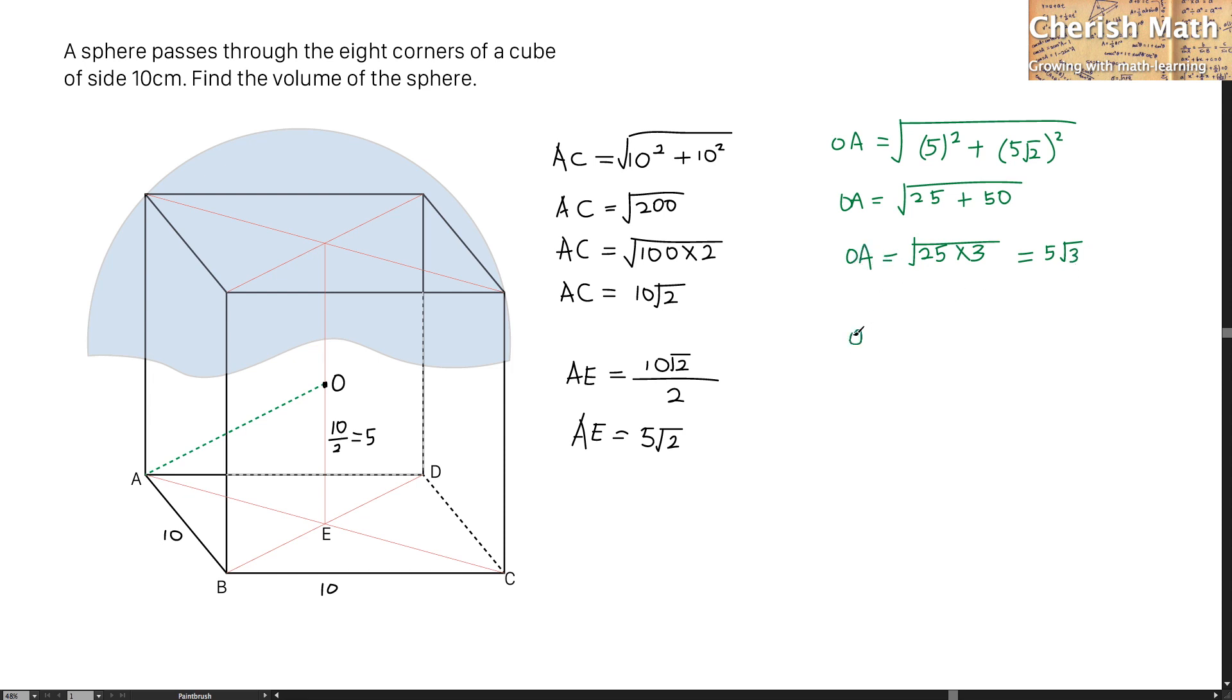OA is also known as the radius of the sphere here. So, I'm going to use the volume of the sphere, which is given as 4 over 3 pi r cubed. And by substituting the value of r here, which is 5 root 3, I will be solving the problem here.